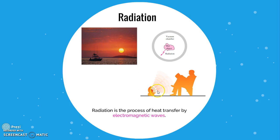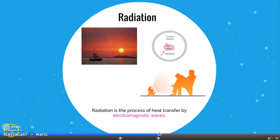Since radiation does not require a medium, this is how energy from the sun travels through space to the earth — there is no medium between the earth and the sun. Similarly, when you sit some distance away from a room heater, energy is transferred to you through radiation.